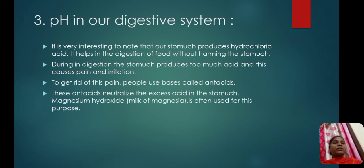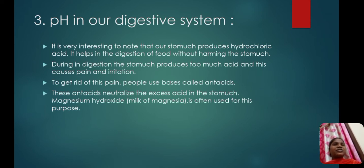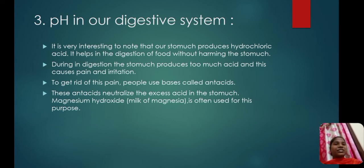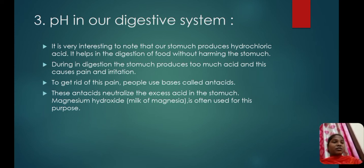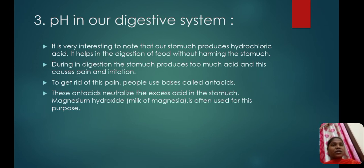The third topic: the pH in our digestive system. It is very interesting to note that our stomach produces hydrochloric acid, which helps in digestion of food without harming the stomach. During digestion, the stomach sometimes produces too much acid, which causes pain and irritation. To relieve this pain, people use bases called antacids, like magnesium hydroxide, which is also known as milk of magnesia.